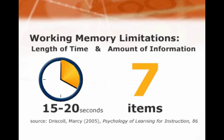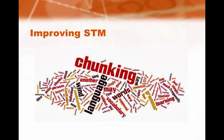Two key limitations of working memory are: first, information in working memory is very short-lived, lasting between 15 to 20 seconds; and second, it can deal with only five plus or minus two items at a time.